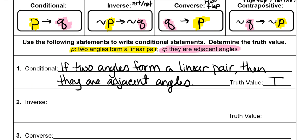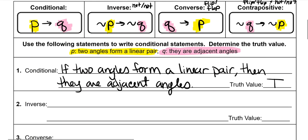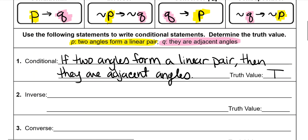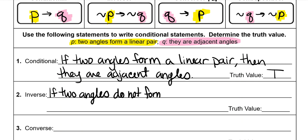The inverse is not-not, so we're going to write P then Q but put nots in there. So: if — instead of saying 'two angles form a linear pair' we're going to say 'two angles do not form a linear pair' — then instead of saying 'they are adjacent angles' you will say 'they are not adjacent angles.'